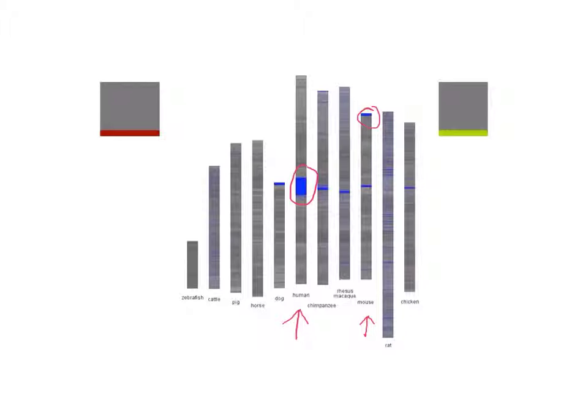In fact, if we were to search all the DNA in every single one of these organisms, we would find that every single one has the gene for lungs, except for zebrafish. So that means zebrafish don't have lungs, and in fact, they have gills instead.